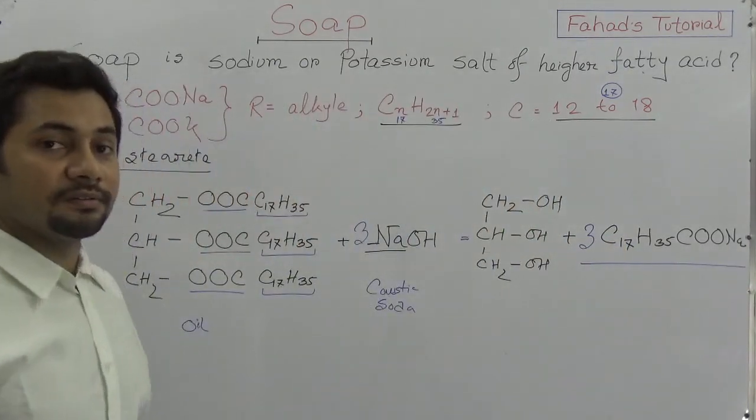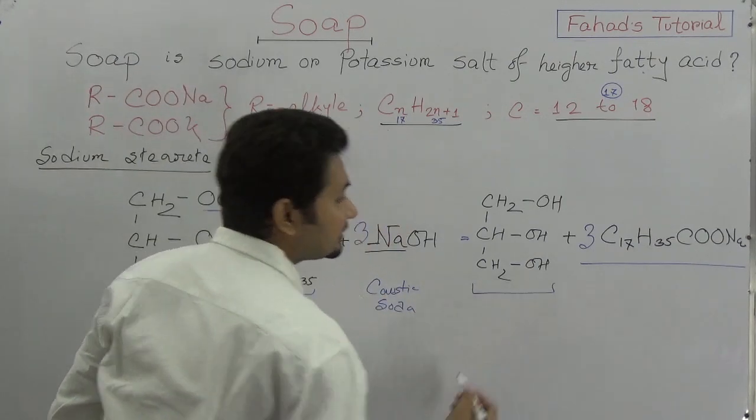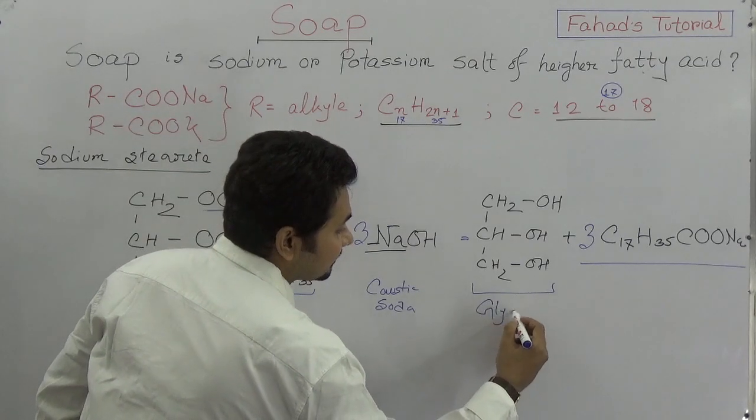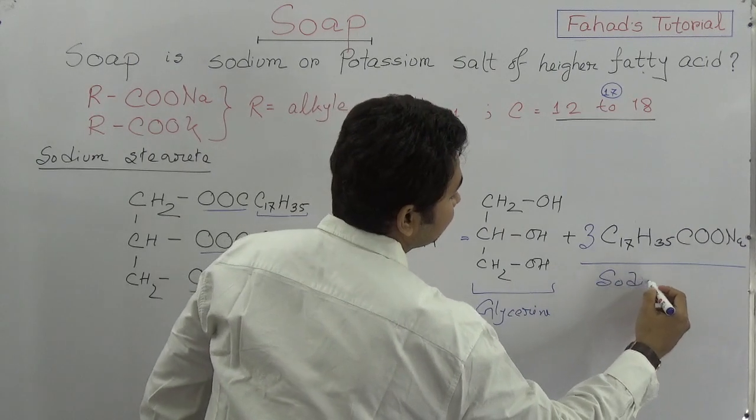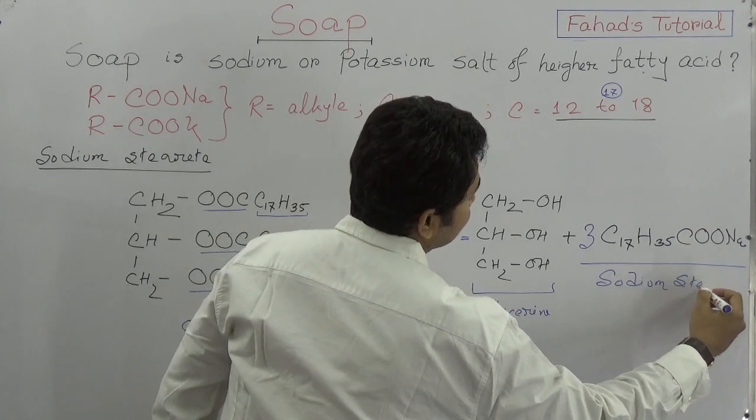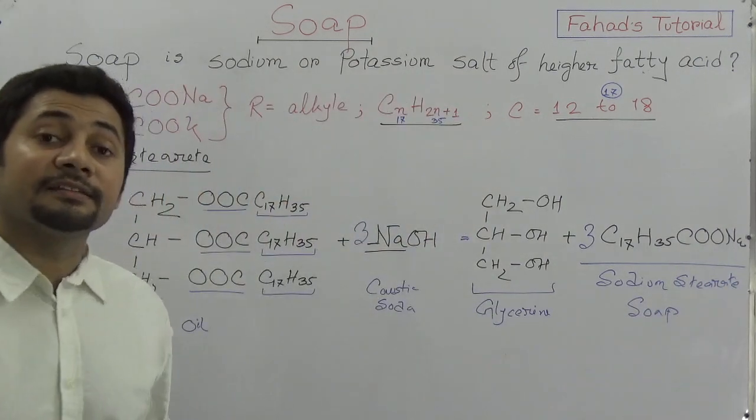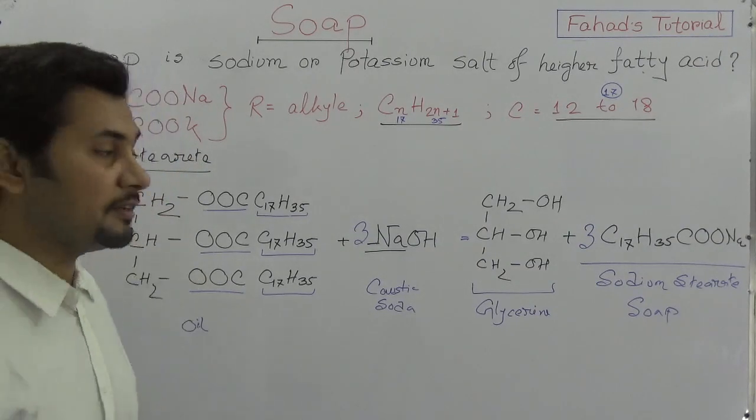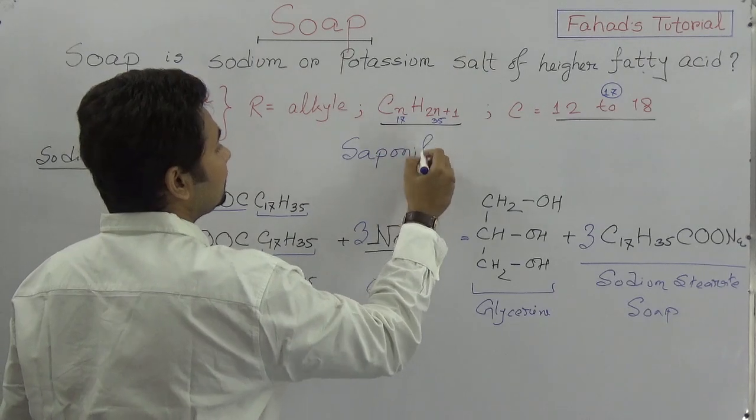The main component: three times is written here and sodium number is also three, so we can write C17H35COONa, and that should be three molecules. This is sodium stearate or soap. As a byproduct, glycerin will be produced. The production process of soap is known as saponification.